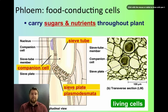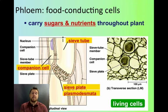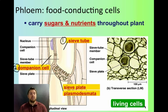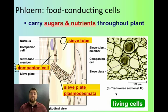Just like xylem cells, there are two types of phloem cells: sieve tube cells and companion cells. A big difference is that xylem cells were dead at maturity, but phloem cells are living at maturity. Because all that's being transported through the xylem is water, they can just be empty pipes. But since what's being transported through the phloem is a sugary nutrient substance, it has to be transported through the cytoplasm of cells, so those cells have to be alive.